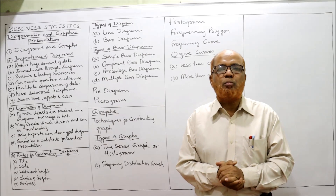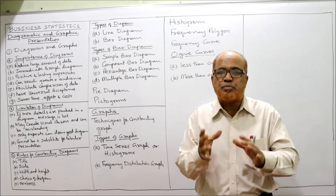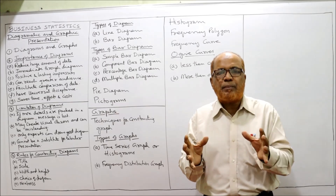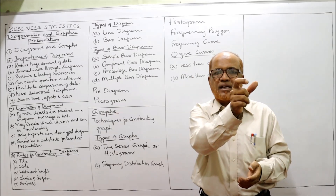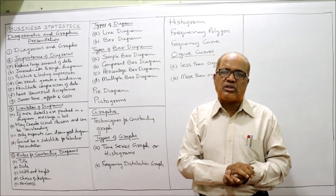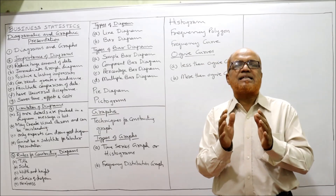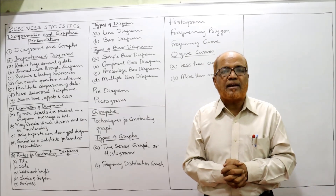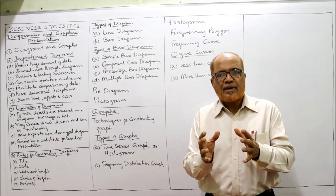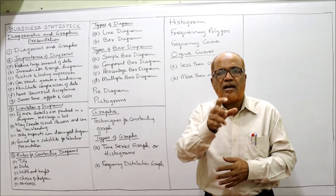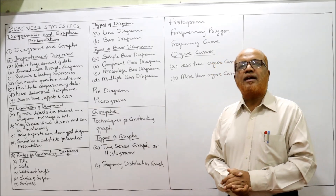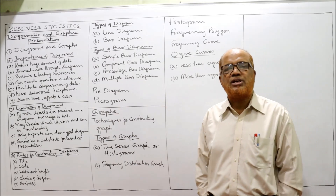So far we have discussed diagrams; now we will discuss graphs. A graph is a special mode of presenting data on a specialized paper called graph paper, which shows smooth horizontal and vertical lines. A graph paper has four quadrants; in the first quadrant all x and y values are positive. By collecting statistical data and presenting it on graph paper we can get the graphs. The data is plotted on two axes — the x-axis (horizontal) and the y-axis (vertical). Graphs are divided into two categories: time series graphs and frequency distribution graphs.